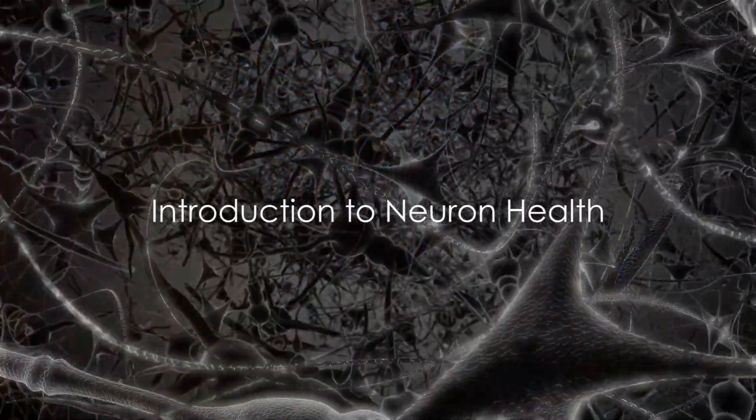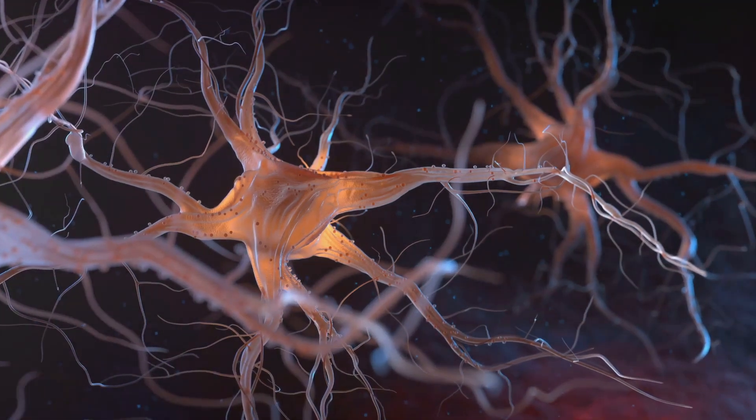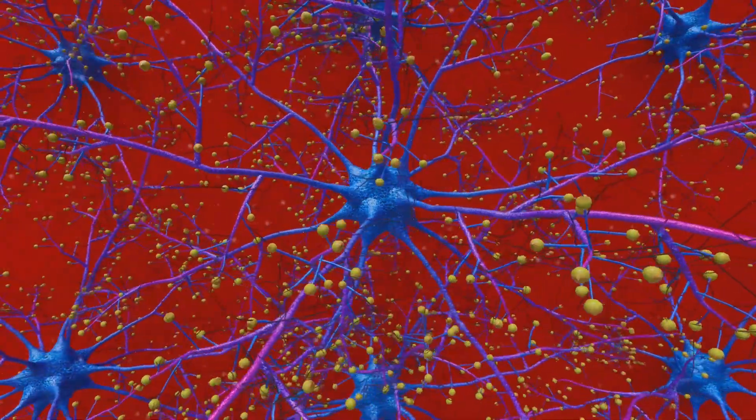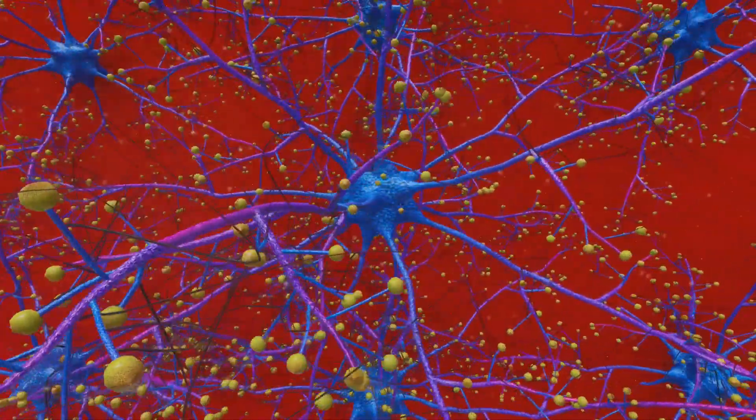Have you ever wondered how your brain functions? It's all about neurons, the basic units of our nervous system. These microscopic powerhouses influence everything, from the rhythm of our heartbeat to the depth of our thoughts.